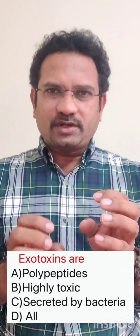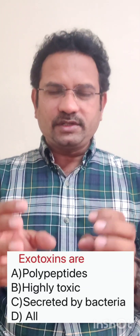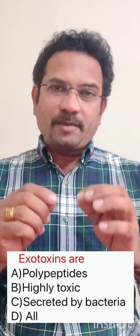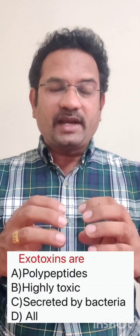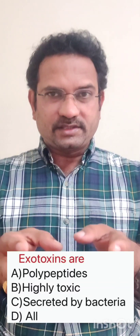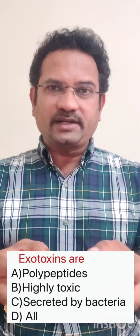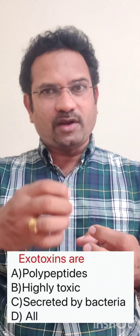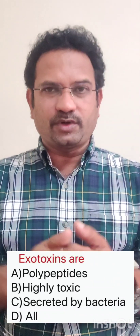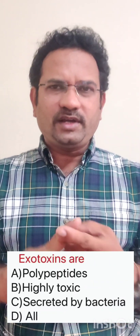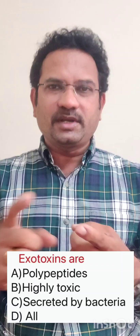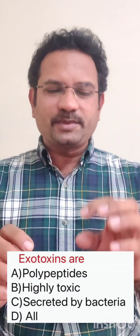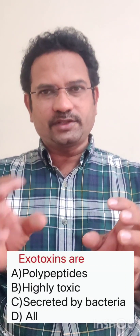When you compare exotoxin with endotoxin — endotoxins are also chemicals, but they are released by bacteria when bacteria dies. After the death of bacteria, the chemicals from the bacterial organism are released; they are called endotoxins. They are not highly toxic, and chemically they are lipopolysaccharides. This is the difference between endotoxin and exotoxin.